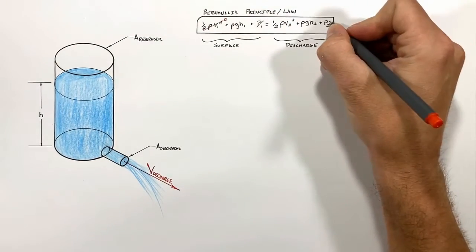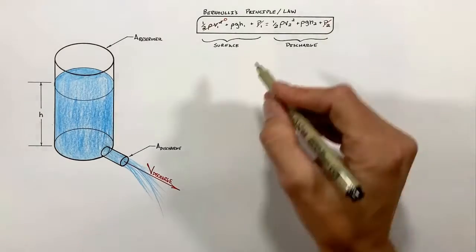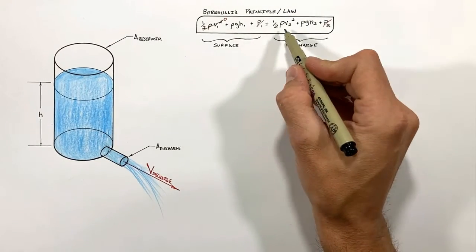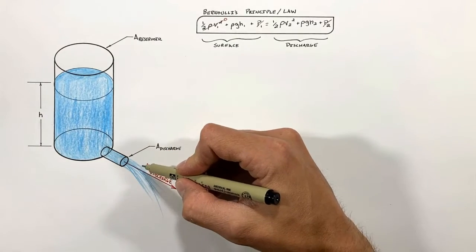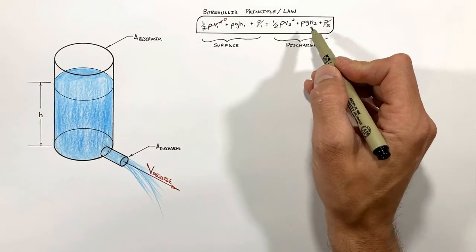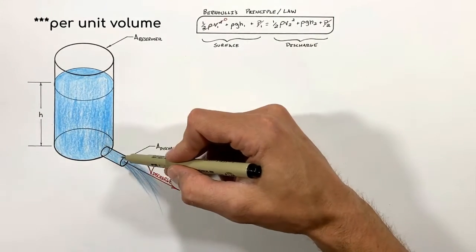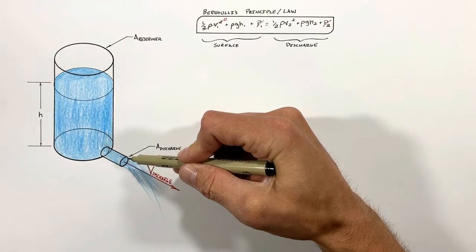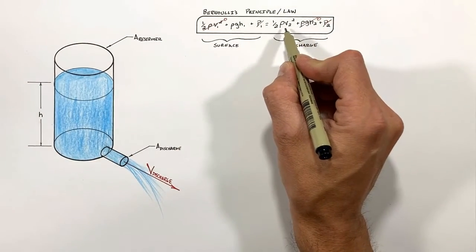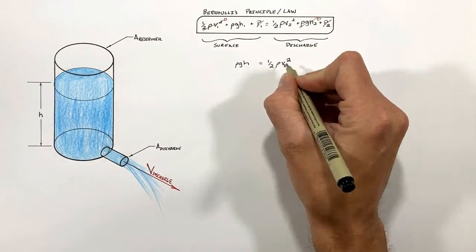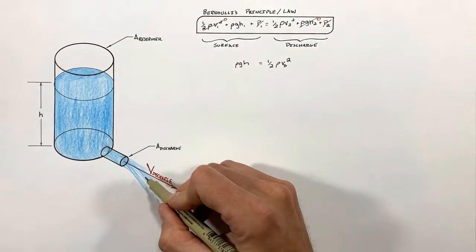Now moving on to the discharge, there's a kinetic energy term because the fluid is moving as it exits the discharge. However there is no potential because remember we said this drain hole is at an effective height of zero. So we're just left with these two terms, and in solving for the velocity at the discharge.